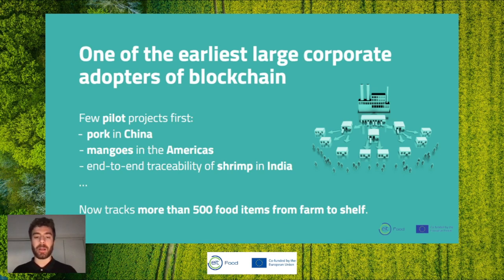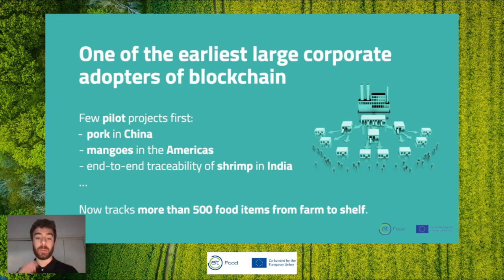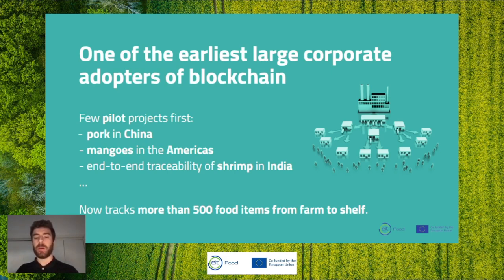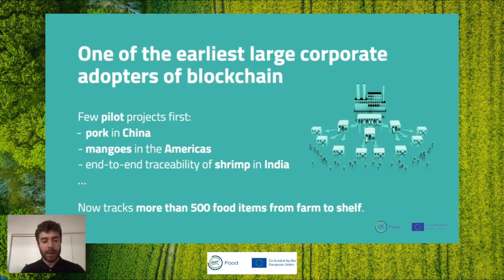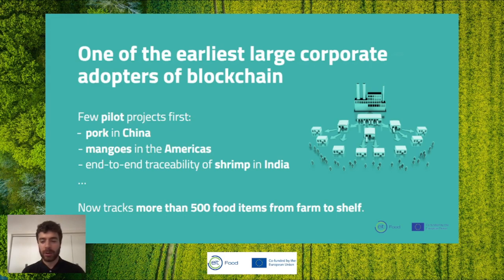The mango pilot in America was the first time Walmart used IBM blockchain, and it was very successful — they brought down the time to trace a product from origin from around two weeks to just 2.2 seconds. Today, Walmart uses blockchain very widely and tracks more than 500 food items from farm to shelf.